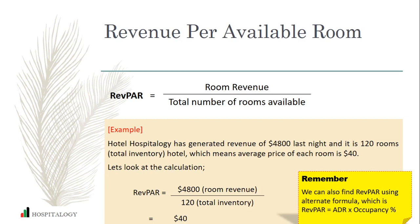So the hotel did $4,800 in revenue and the total inventory of the hotel is 120 rooms. So $4,800 divided by 120 means each room has generated revenue of $40 — which includes even the unsold rooms.